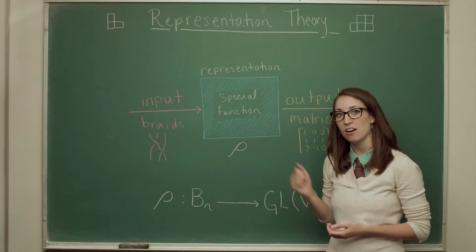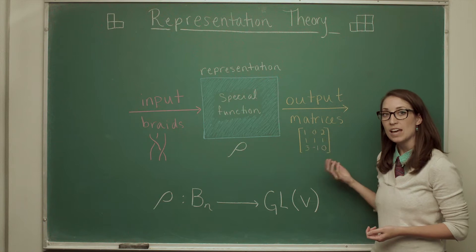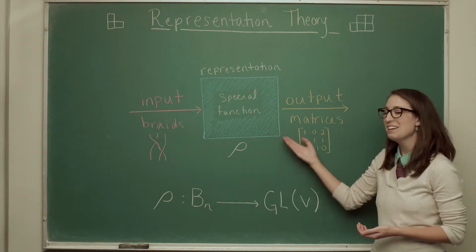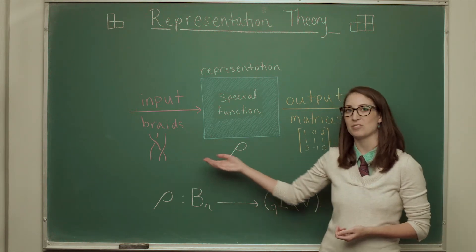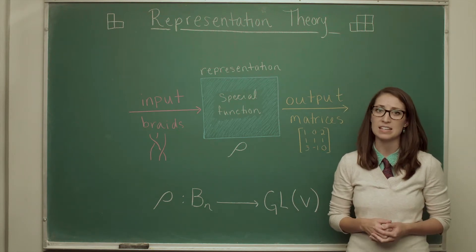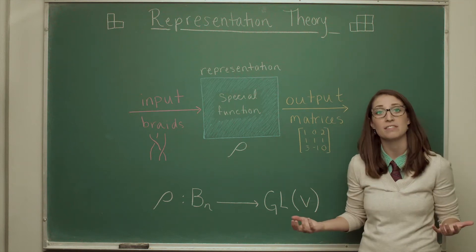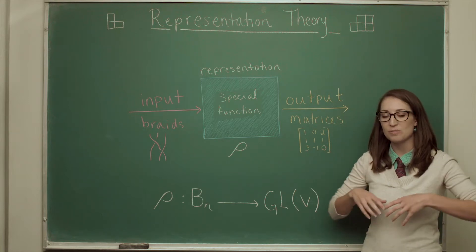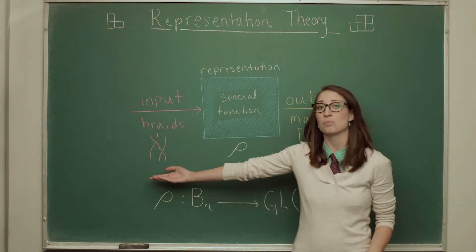So a representation in our case is going to input braids and output matrices. A matrix is an organized array of numbers. And so here we're starting to see the math come in. The whole purpose of doing this representation process is to take the braids and change it into something that we know how to study. There is a huge theory of matrices, and it's called the theory of linear algebra. And so doing this translation process, we sort of have gained all of the tools of linear algebra that we didn't have to study the braids to begin with.